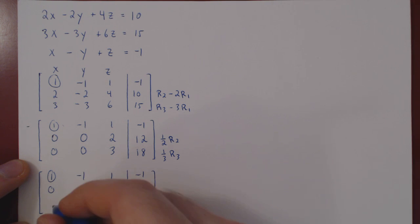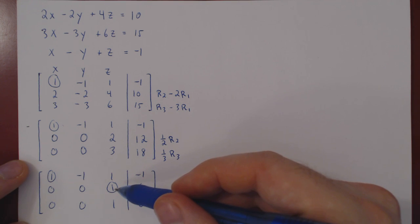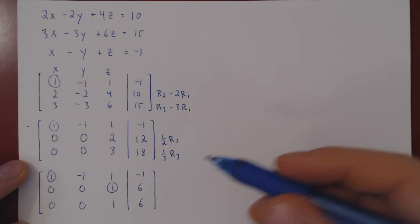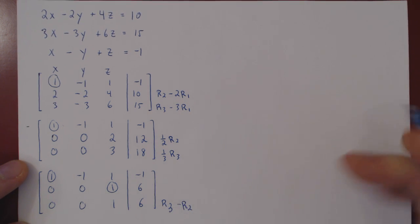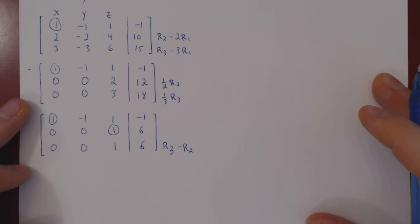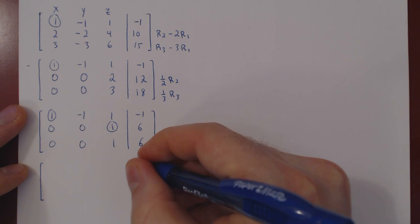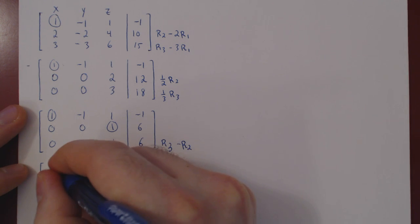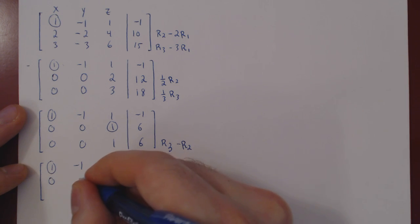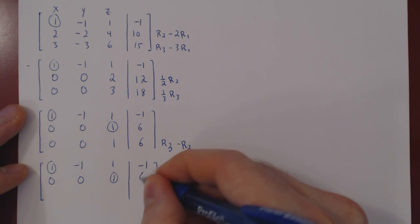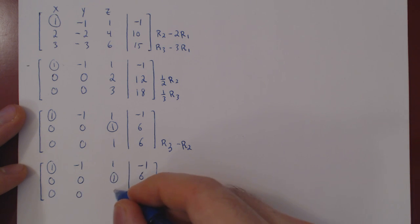We recopy the first row, then apply the row operations. One-half of row two gives us zero, zero, one, six — this is our second leading one. One-third of row three gives zero, zero, one, six as well. We now kill the entries below by doing row three minus row two. We recopy the first two rows as we are not changing them.